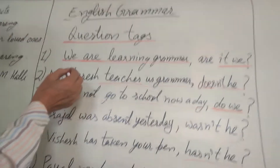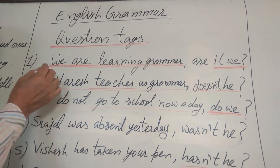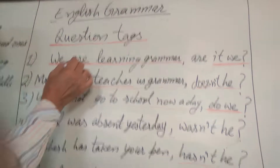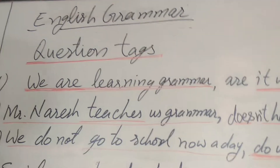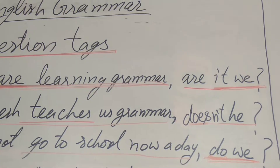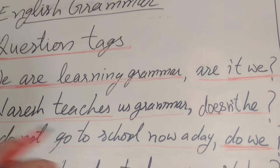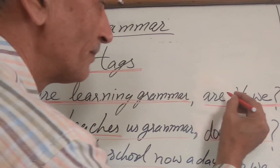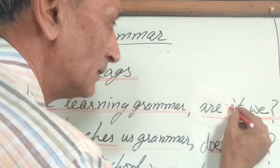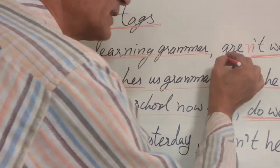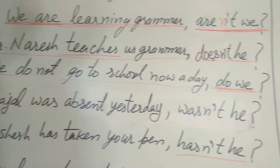Let's look at some examples. In the first sentence, we have got two parts. One is: 'We are learning grammar.' This statement is followed by a small question — a question tag — that is, 'Aren't we?' This part is known as the question tag.